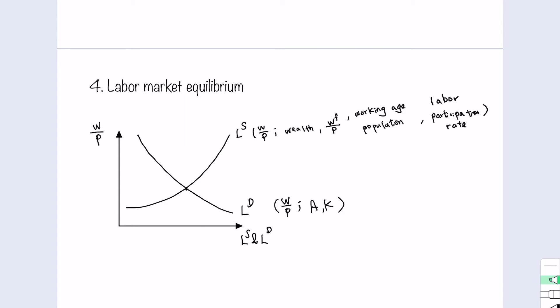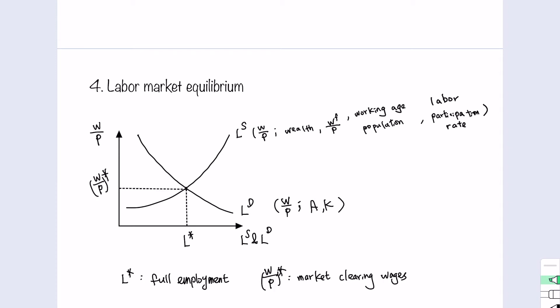Now we have both the labor demand curve and the labor supply curve on the graph. The crossing point of these two curves gives a quantity where the quantity of labor supply equals the quantity of labor demanded — we call this full employment. This point also has a labor price at which supply equals demand, which we call the market clearing wage. At this wage rate, quantity of labor supply equals quantity of labor demand, there is no excess demand nor excess labor supply, so the market clears.